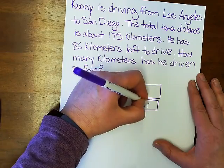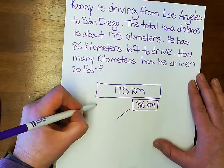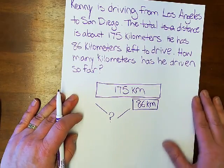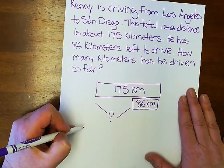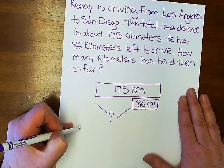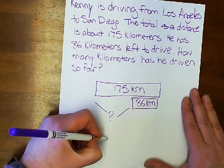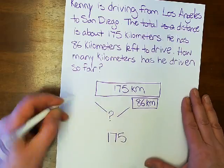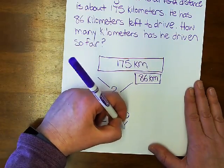Eighty-six kilometers left. So that means I don't know how far he has already driven. Since I can't easily solve this problem using mental math, I can use the standard algorithm for subtraction. So I can rewrite the problem vertically. I'm going to write 175 minus 86.